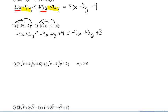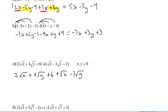We're going to be multiplying those 1's through. We get 2 root x plus 4 root y plus 6 plus root x minus 3 root y plus 2. Notice the like terms are exactly the same. In this case we've got 2 root x's and 1 root x, gives us 3 root x. 4 root y minus 3 root y plus 1 root y, and then just numbers plus 8.